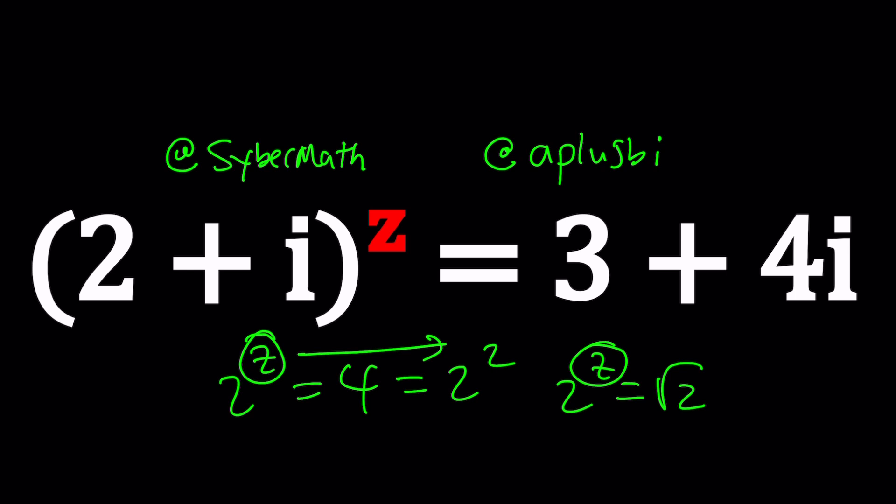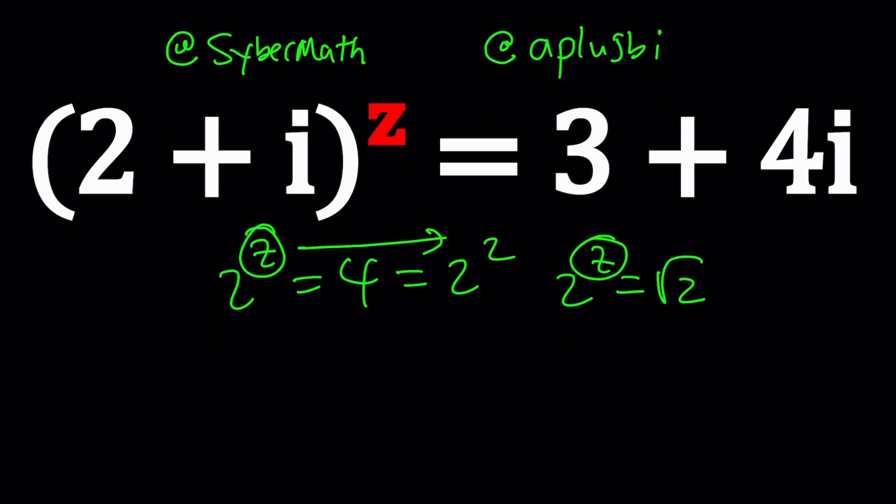But when the base is a complex number, a non-real complex number, because complex numbers can also be real sometimes, and you get another non-real complex number, how do you deal with something like this? I know some people are going to say, let's just log both sides. Do you want to use log base 10 or natural log? Natural log is probably better.